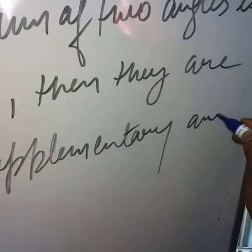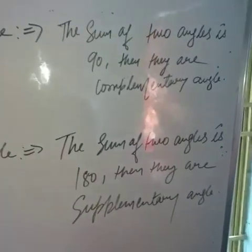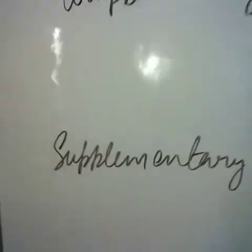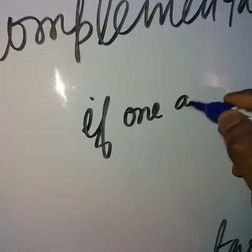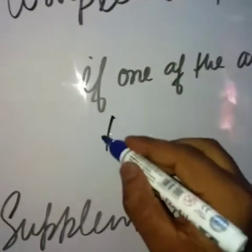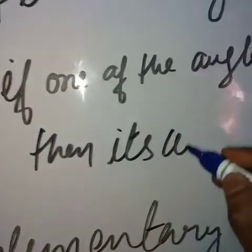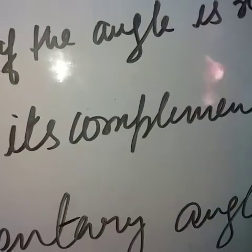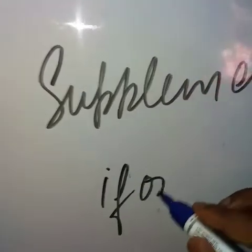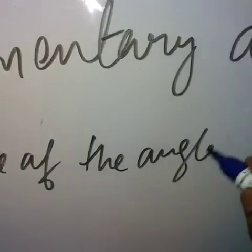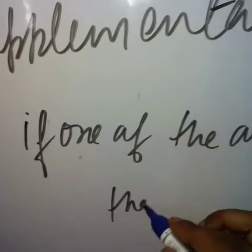The most important point of these two topics — complement and supplement: when the sum of two angles is 90 degrees, then they are complementary angles. If one of the angles is x, then its complement is 90 degrees minus x. If one of the angles is x, then its supplement is 180 degrees minus x.